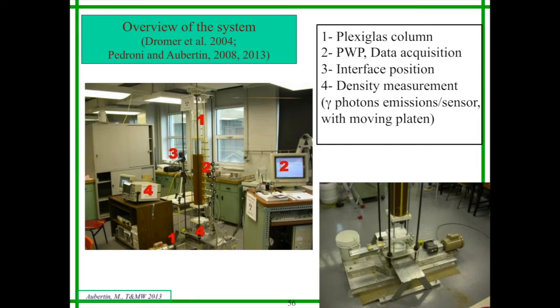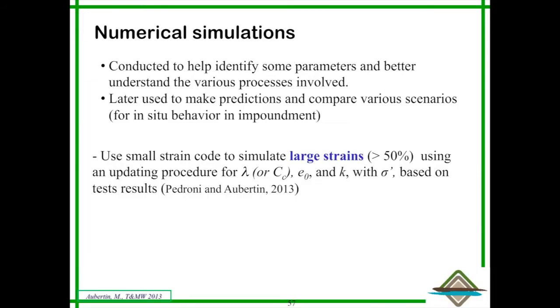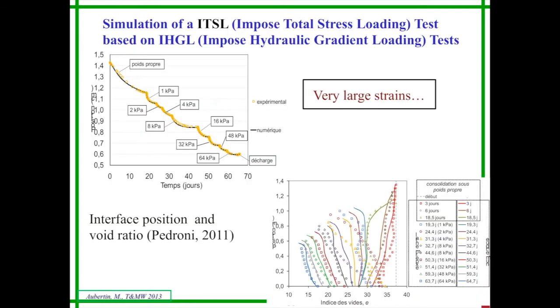This is a typical setup that allows us to do settlement and consolidation using different means to produce consolidation, including total loading and hydraulic loading. With this, we were able to do some modeling and numerical analysis. One of the things we were able to do is to obtain the complete behavior of the sludge. This would be the interface during deposition, self-weight consolidation, and loading for very large strain using small strain codes, finite element codes.